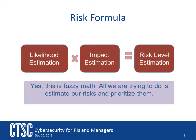The formula for calculating risk can be thought of as simply taking the likelihood that was estimated in the previous section and multiplying that by the impact, giving us some level of risk estimation. For example, if there is a low likelihood and a low impact, then most likely the risk level we are prioritizing would be low. This is all very fuzzy.